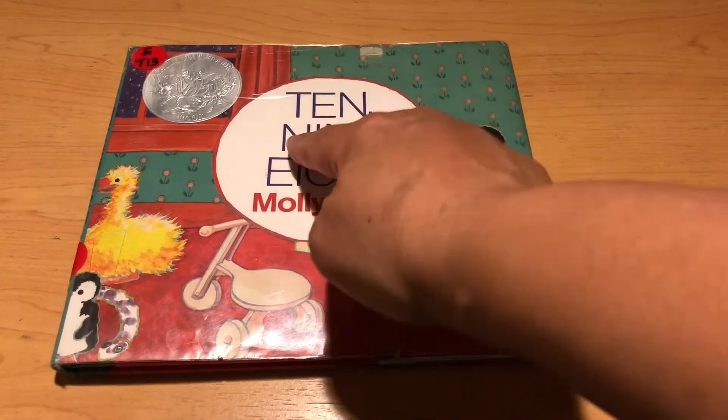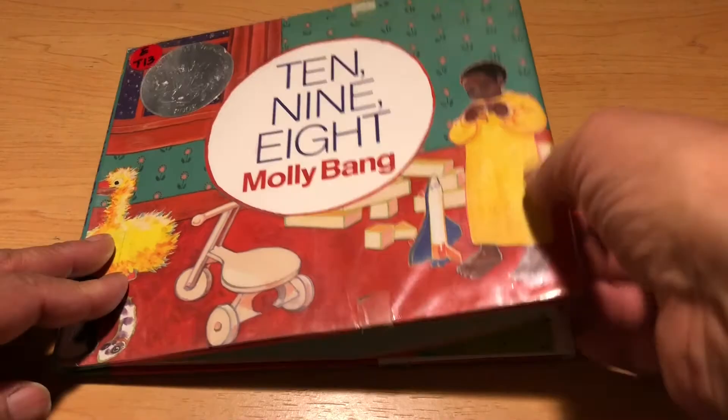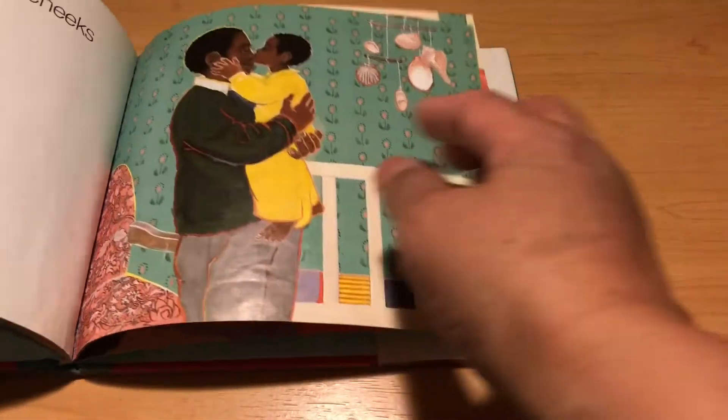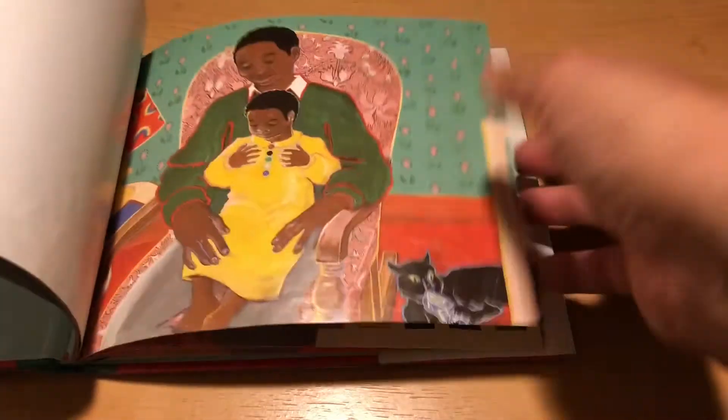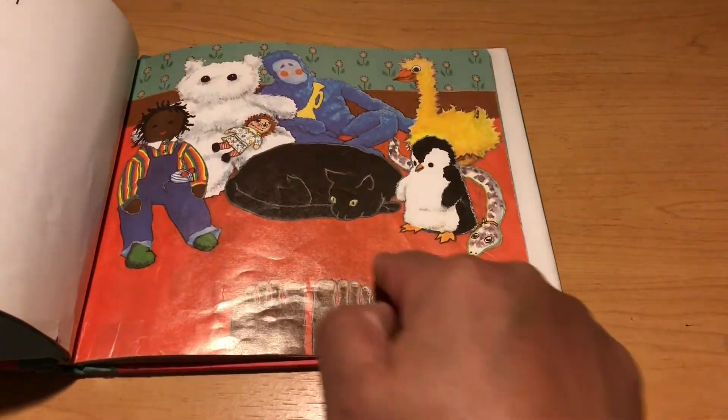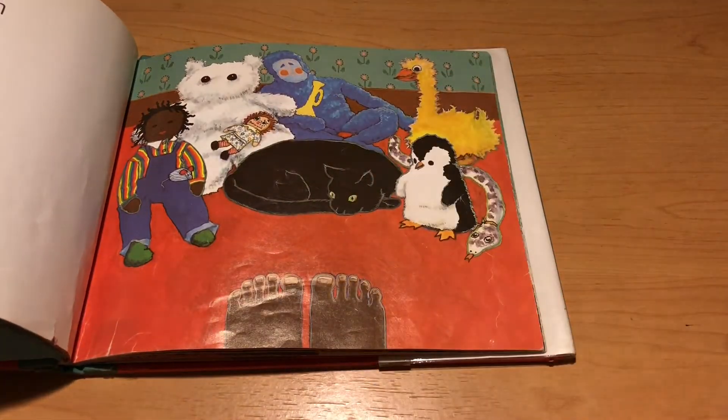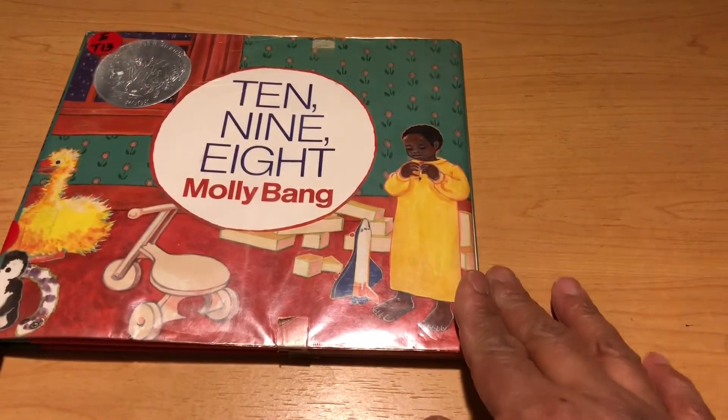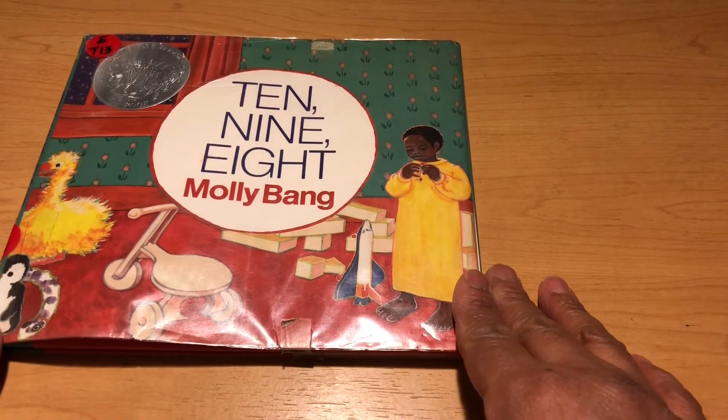In our story Ten-Nine-Eight, we saw lots of different groups of objects. Shoes, toes, animals. Let's do our next activity.